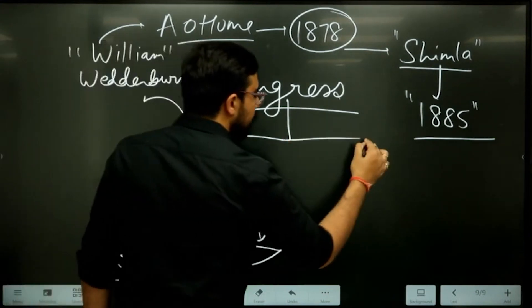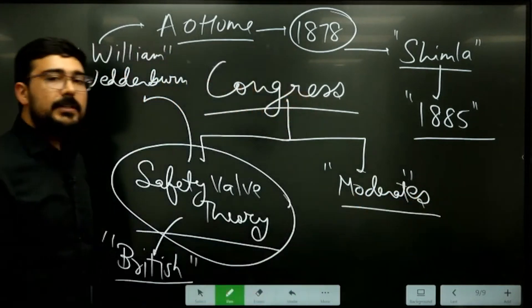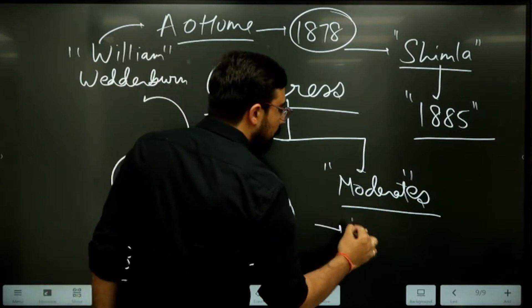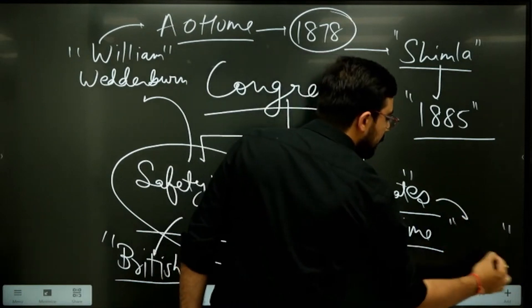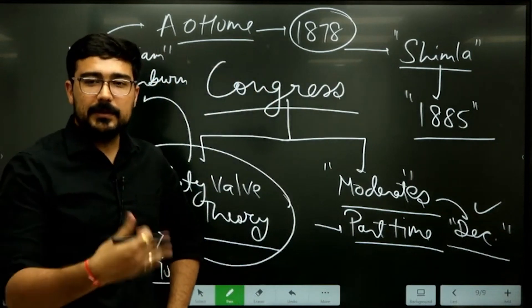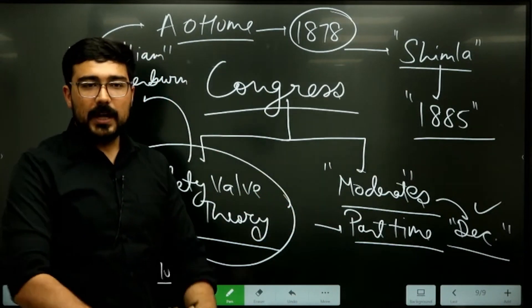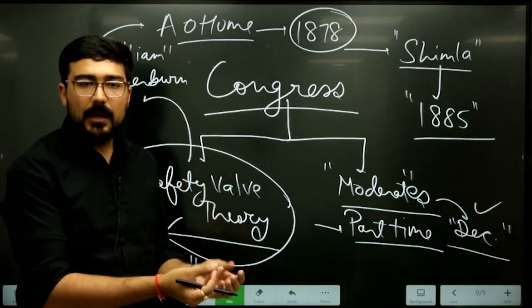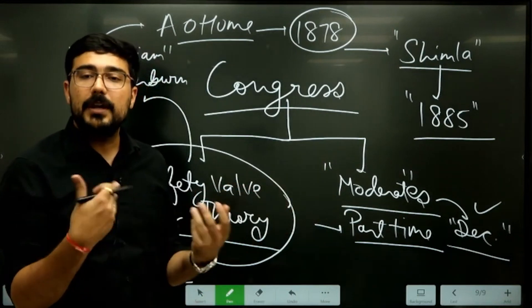However, if we see from the side of the moderates — what choices were there in front of them? They were the initial politicians, and the majority were part-time. Congress used to have sessions from December 28 to 30, so these people were part-time politicians. They were not full-time. They used to meet for a few days, and the majority of them were lawyers, landlords, teachers, traders — different professions, but none of them were full-time politicians.